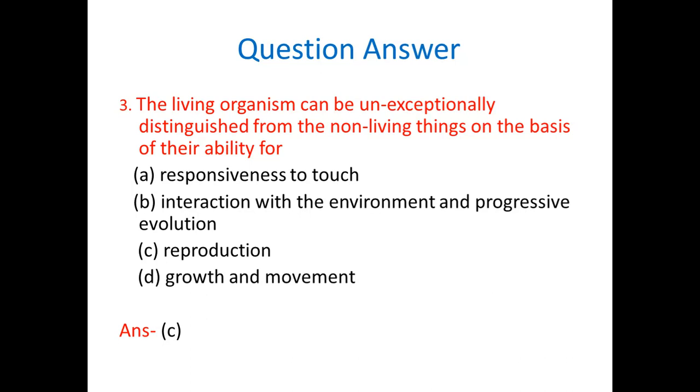The living organism can be unexceptionally distinguished from non-living things on the basis of their ability for responsiveness to touch, interaction with the environment and progressive evolution, reproduction, growth and movement. So correct option will be the reproduction. This is the unexceptionally distinguished condition that is the living thing is having, that is the ability to reproduce, to generate new offsprings.